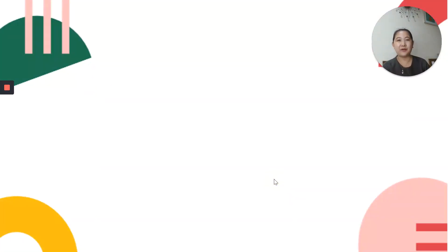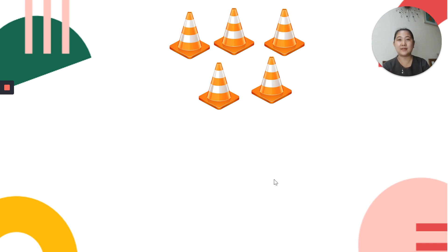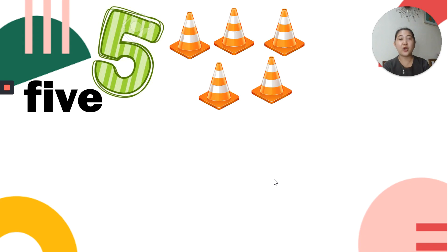Now what's after 4? Yes! 5. Let's count the number of cones. 1, 2, 3, 4, 5. There are 5 cones. Can you write it? F-I-V-E. 5. Number 5. Correct.